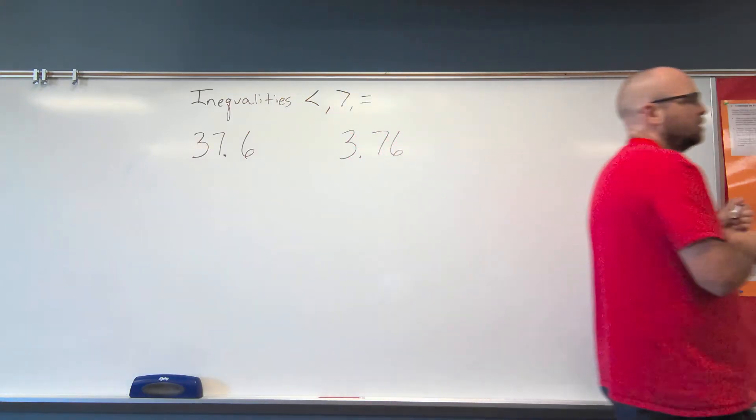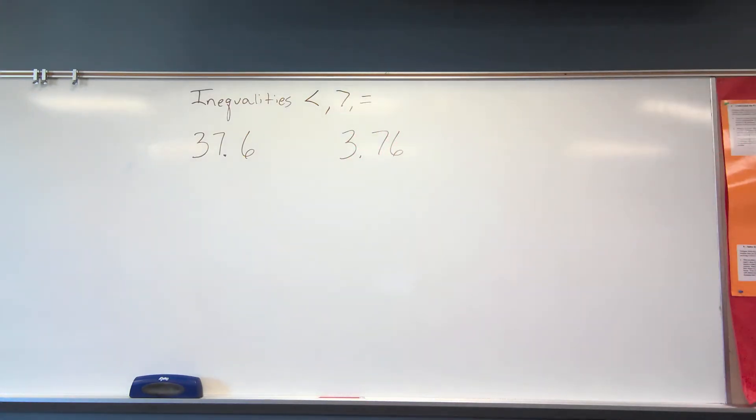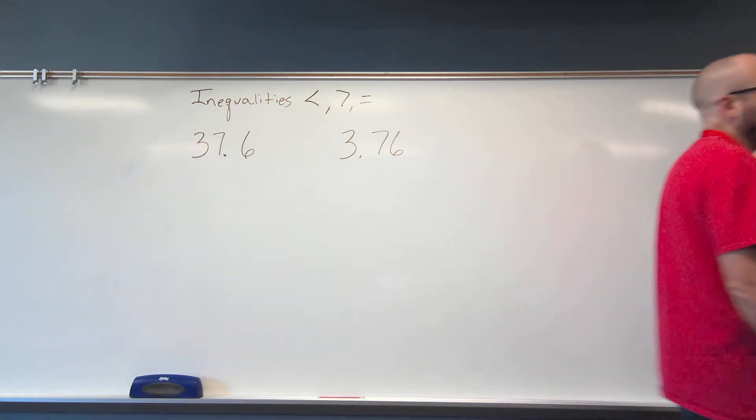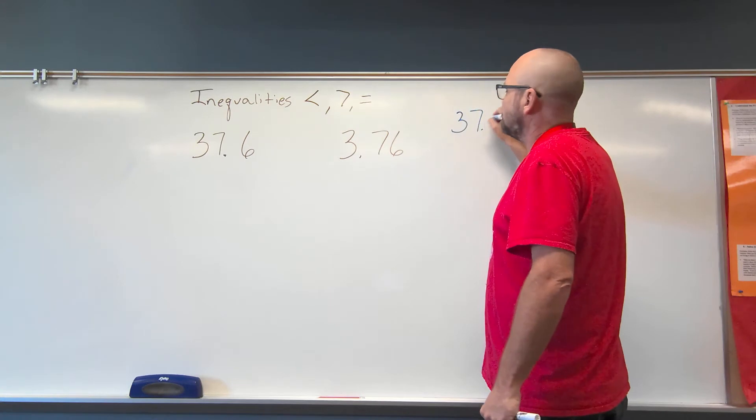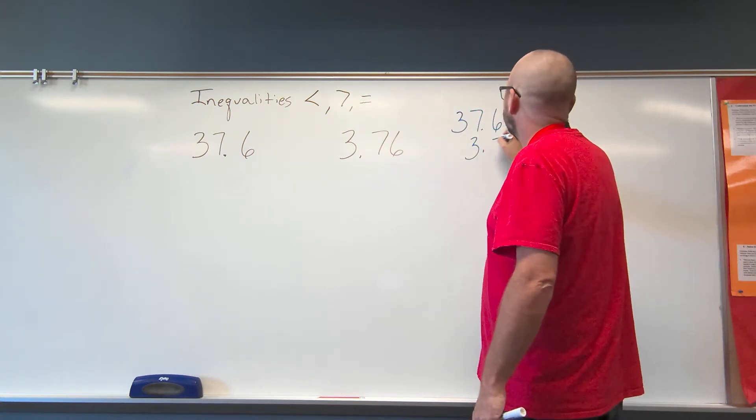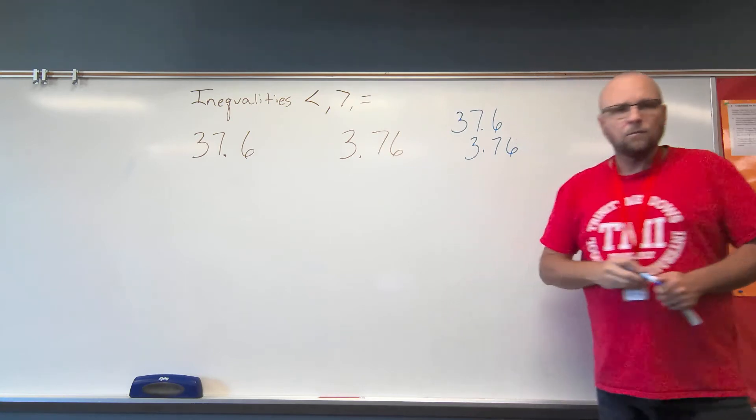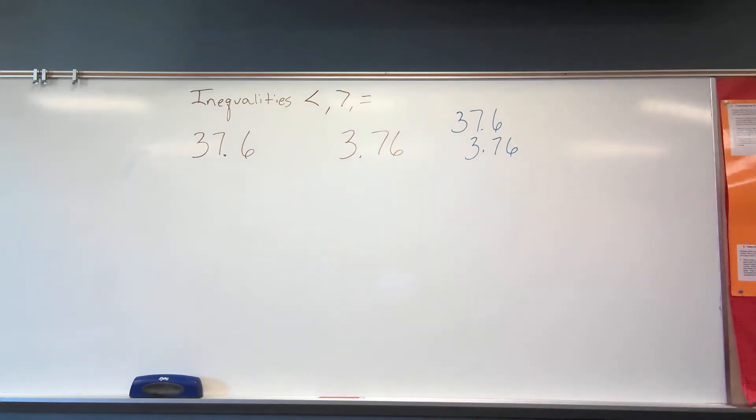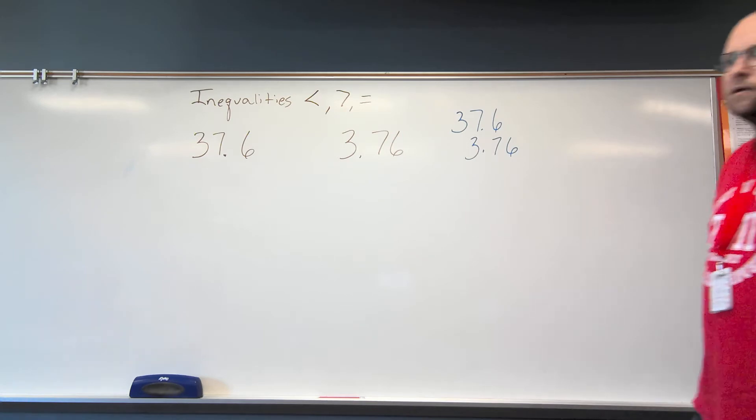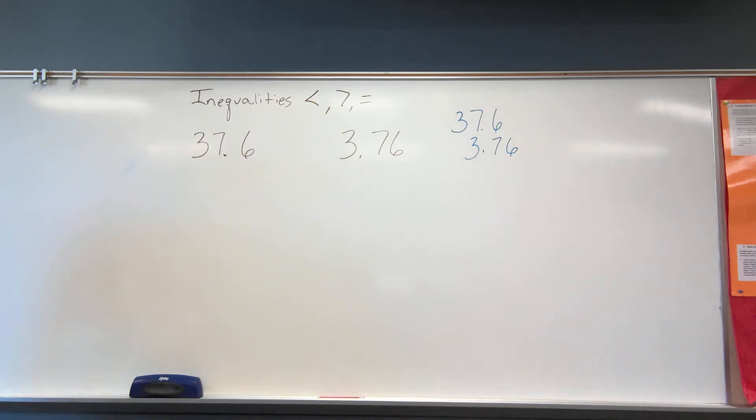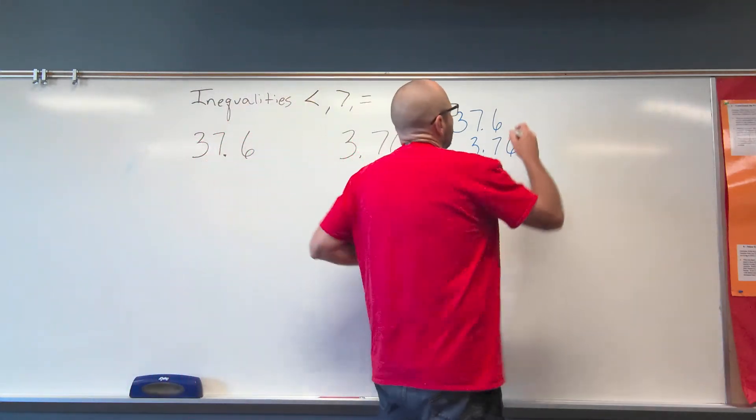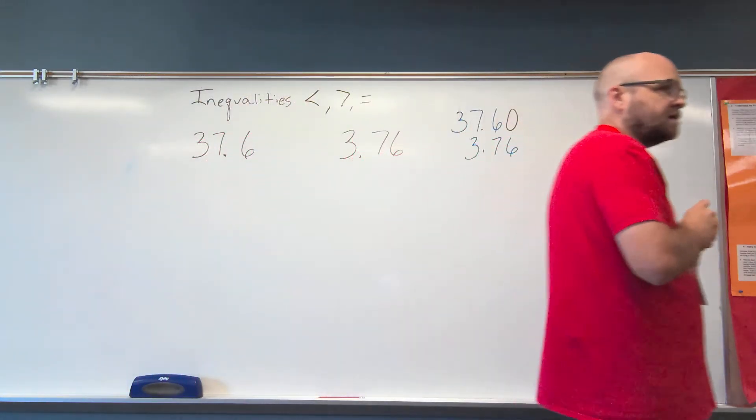Now we have these two decimal numbers. In order to determine which one is greater, or if one is greater, we line them up by place value. So we have 37 and 6 tenths. We have 3 and 76 hundredths. Making sure our ones place is over our ones place. Our decimal points are over each other. The tenths place is over the tenths place. The thousandths place is over the thousandths place. Well, they're not the same.